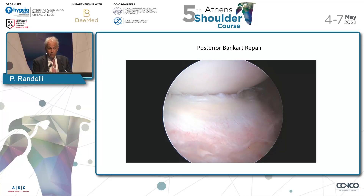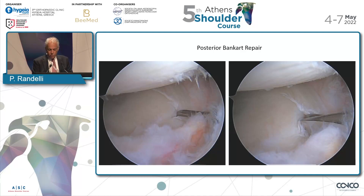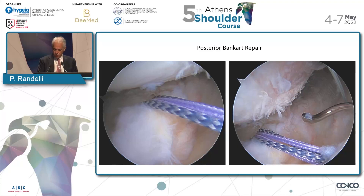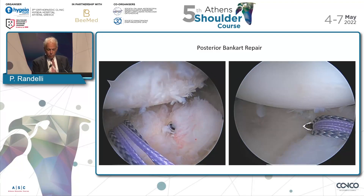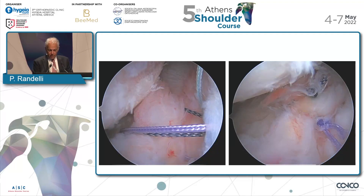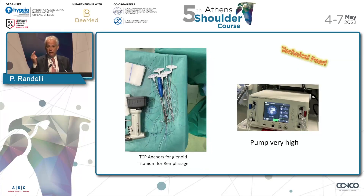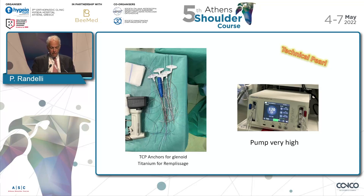You go in the posterior part, use the pump, and you have the possibility to work well. Take advantage of the rotation of the arm — don't stay with a fixed arm, just move — and you'll find enough room to work posteriorly. Then you put the anchor for the remplissage and pass the suture in the parachute technique. Then we fix the posterior Bankart. We start repairing the posterior labrum with one anchor — it was not a huge posterior Bankart — a couple of stitches with capsule and labrum together. Then you close the posterior labrum, and as a final step, you close the remplissage.